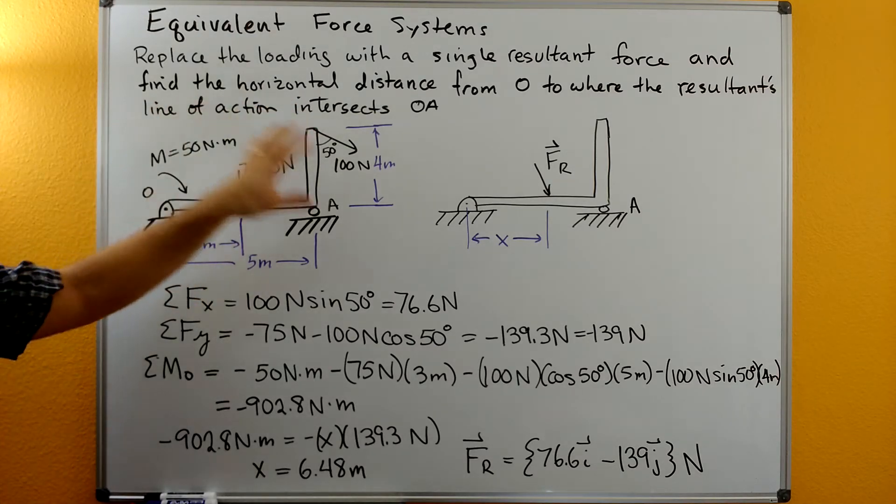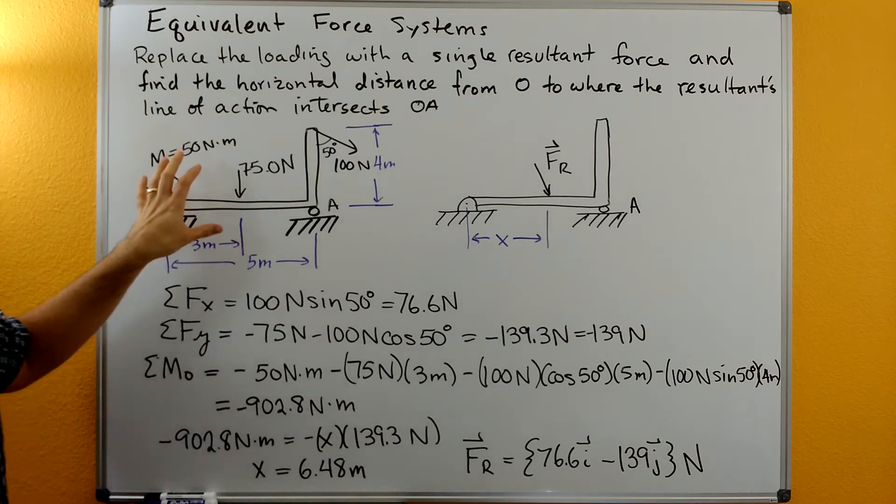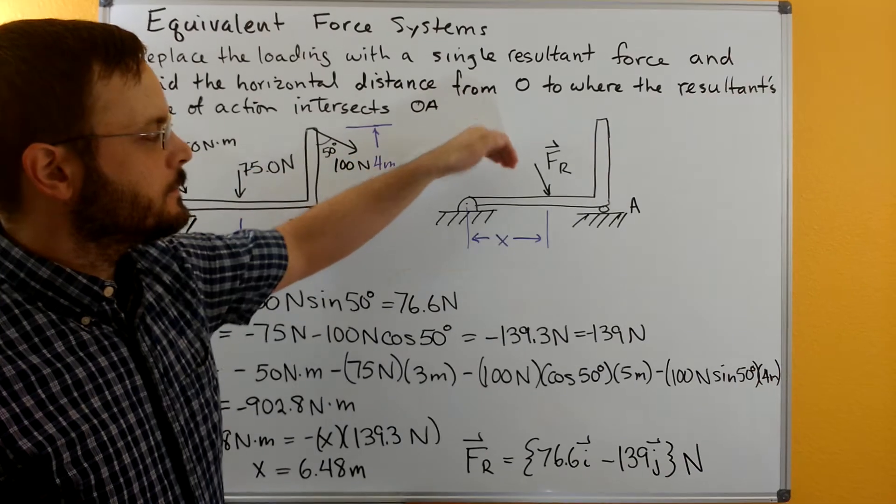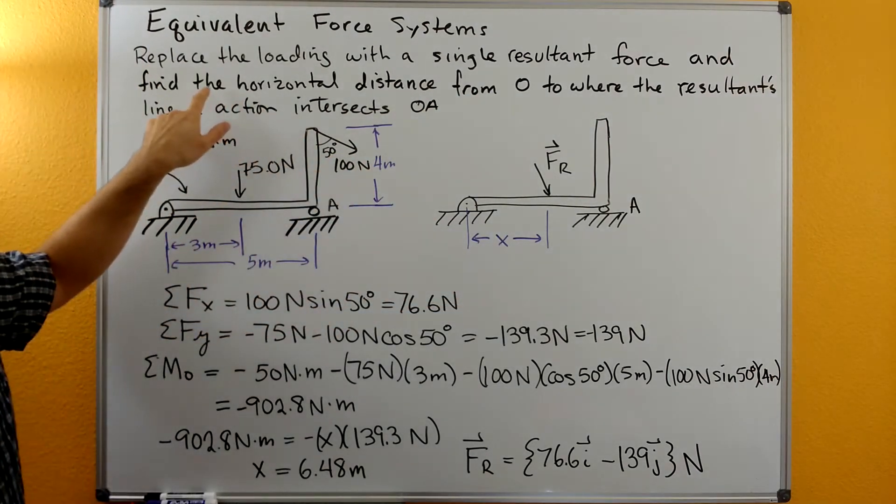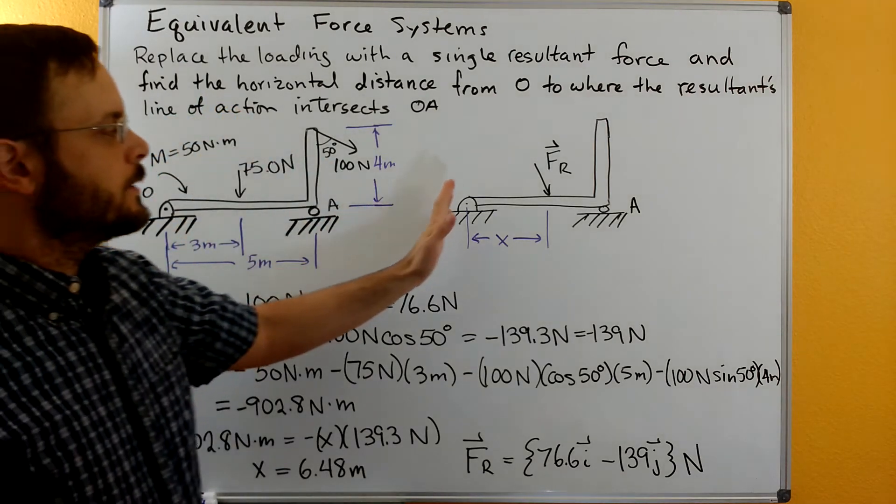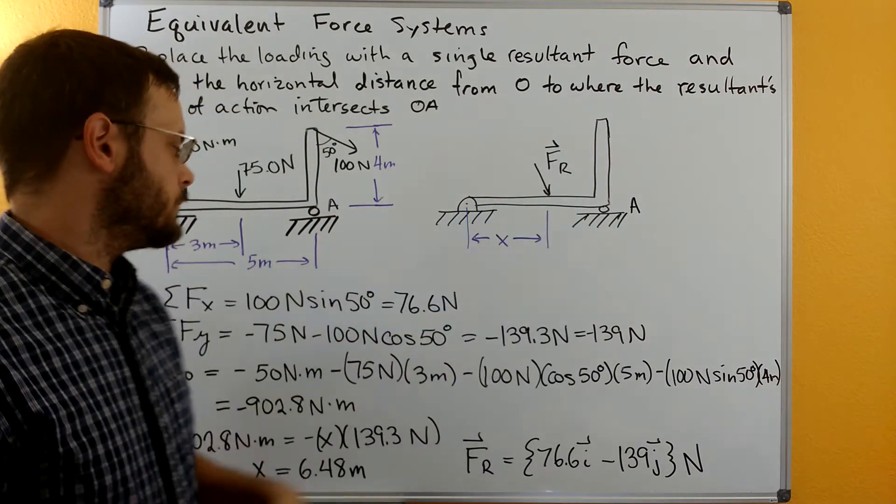We want to replace all the loading on this beam with one single resultant force, and then we're being asked to find the horizontal distance from the edge over to the resultant force.